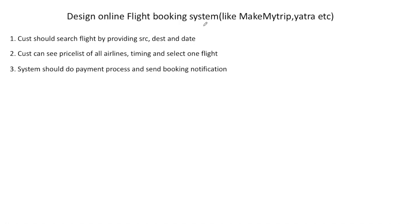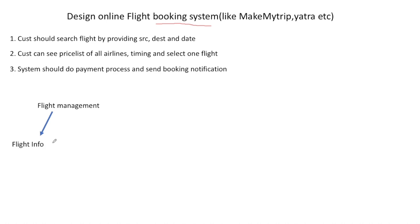To solve this problem, let's break the system into three parts. The first part is flight management: this includes all the flight info we need to provide to a user, seat information so the user can see available seats in a selected flight, and airport and airline information display.